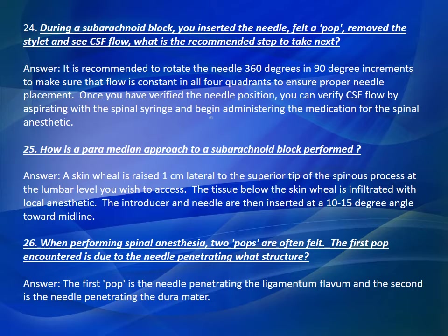Question Number 25: How is a paramedian approach to a subarachnoid block performed? Answer: A skin wheal is raised one centimeter lateral to the superior tip of the spinous process at the lumbar level you wish to access. The tissue below the skin wheal is infiltrated with local anesthetic. The introducer and needle are then inserted at a 10 to 15 degree angle toward midline.